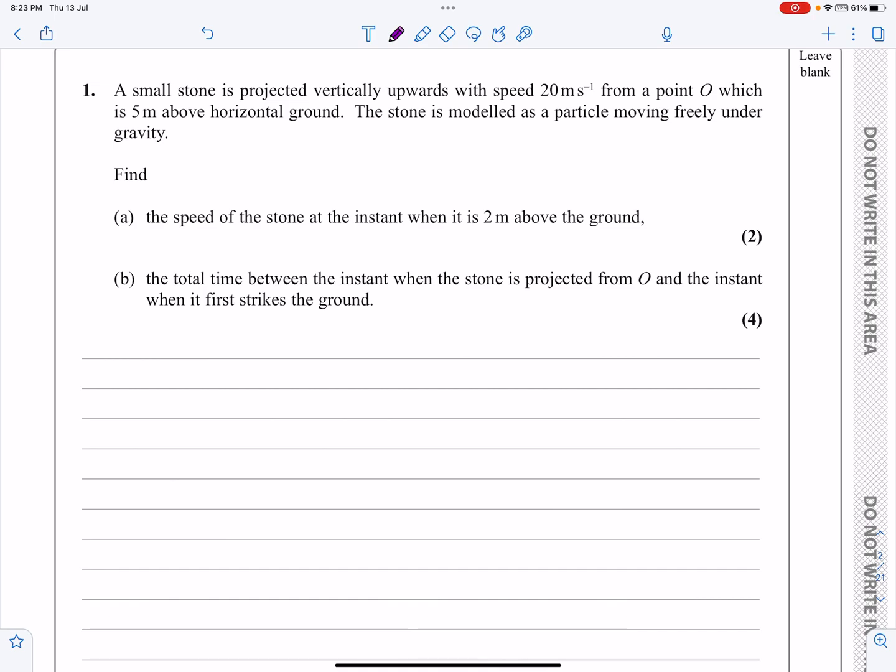Let's have a look at the information they've given us for part A. It says a small stone is projected vertically upwards with speed 20 m/s from point O, which is 5 metres above horizontal ground. The stone is modelled as a particle moving freely under gravity. Find the speed of the stone at the instant when it is 2 metres above the ground, and more information than that.